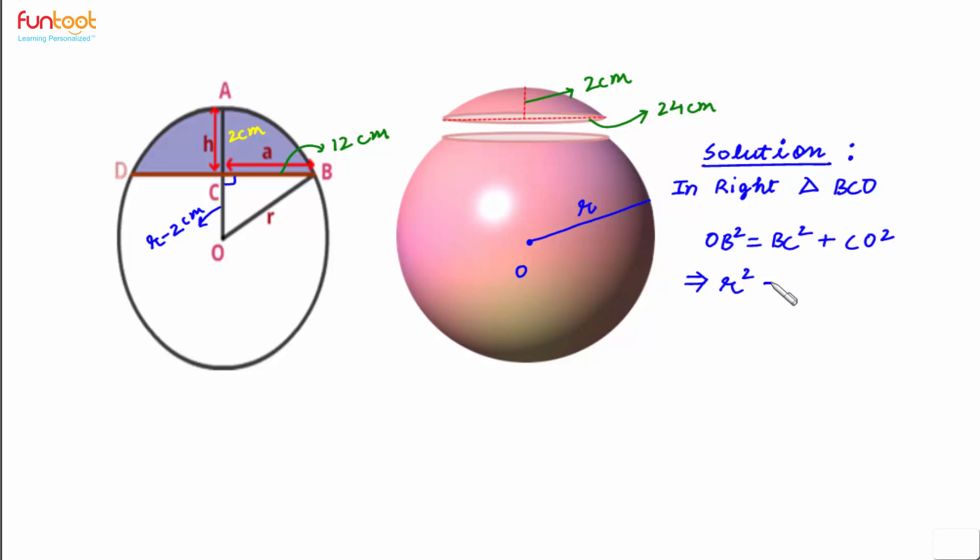Now this will imply, putting the values here, for OB we will write R squared is equal to BC, we will write 12 squared, plus for CO we will write R minus 2 whole squared.